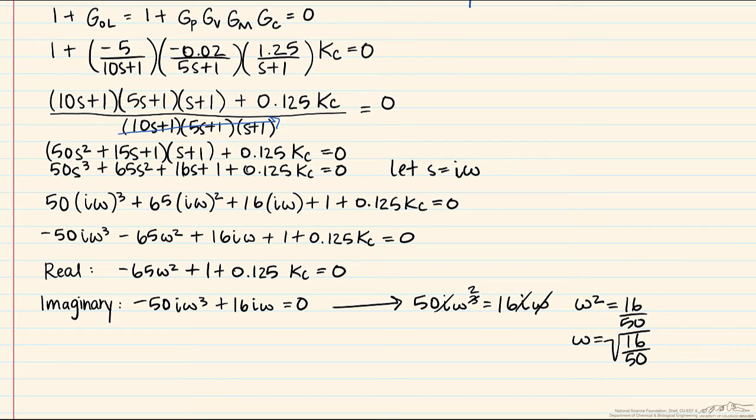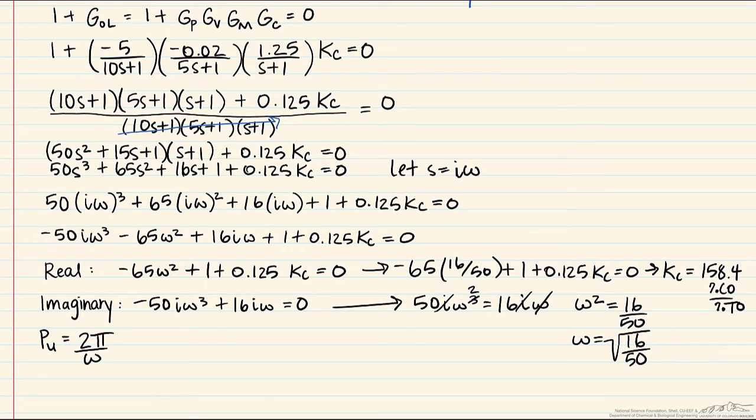We can substitute that term for omega squared into the real equation, and this gives us our ultimate gain is 158.4 percent controller output per percent transmitter output. To find the ultimate period we take advantage of the relationship of 2π over the ultimate frequency. This will become 2π over the square root of 16 over 50, giving us an ultimate period of 11.1 seconds.